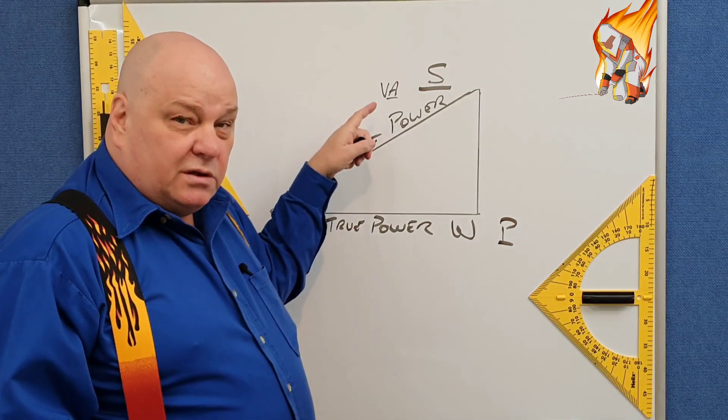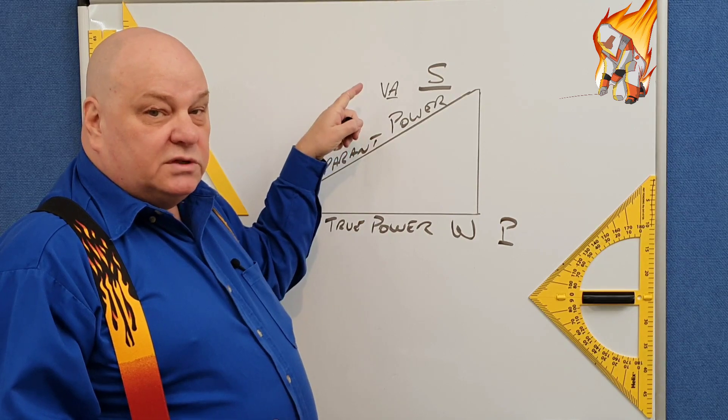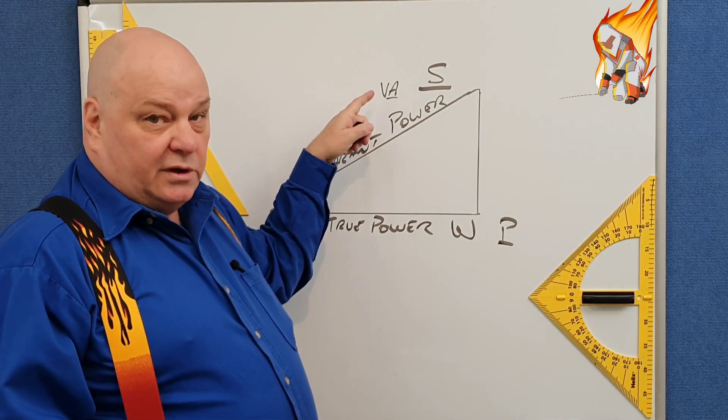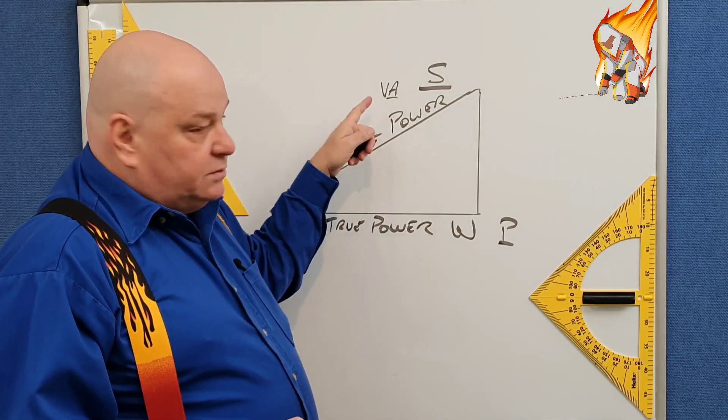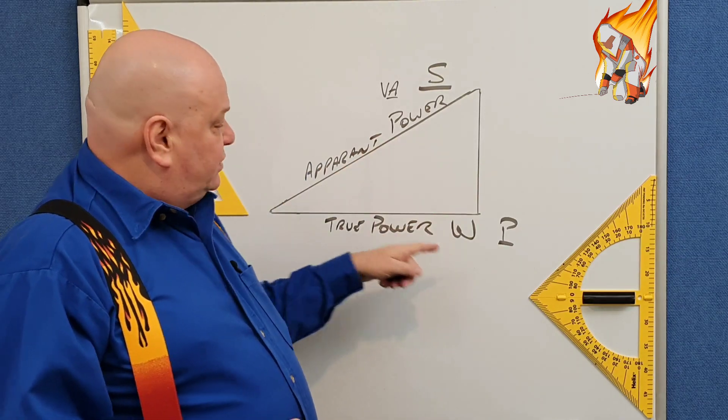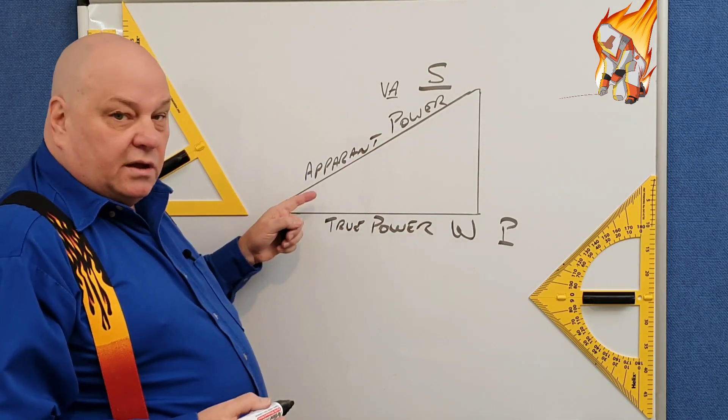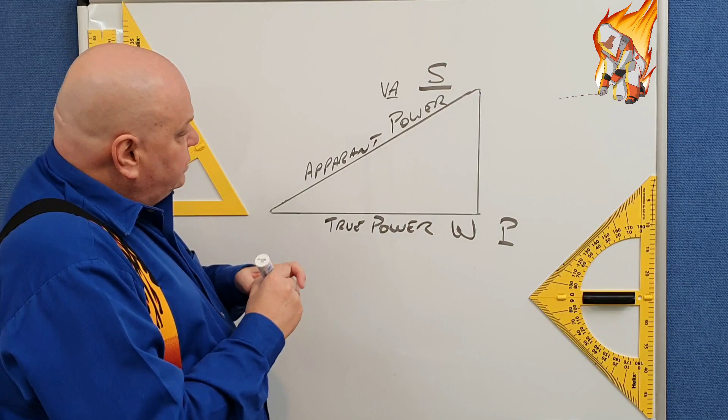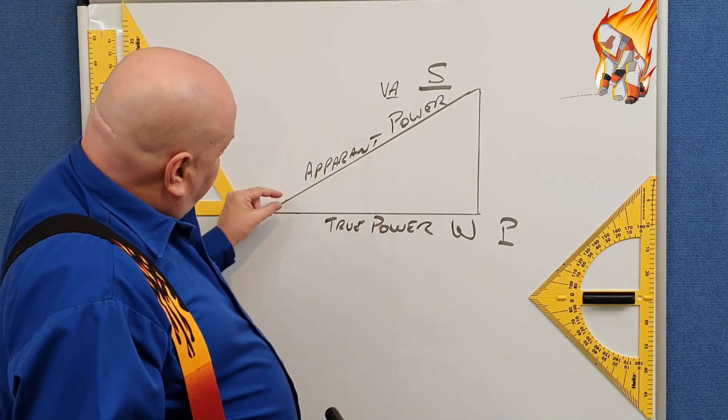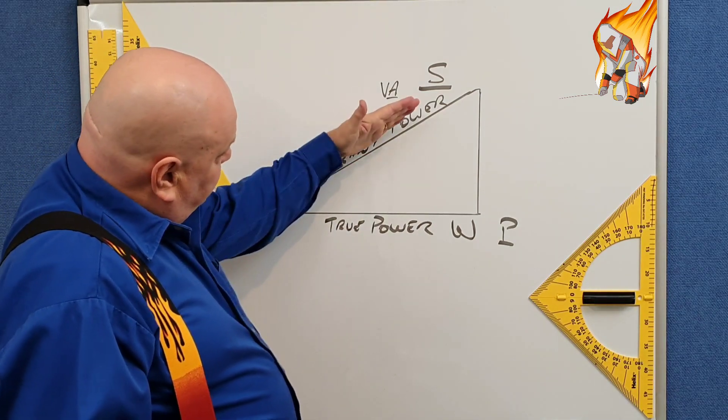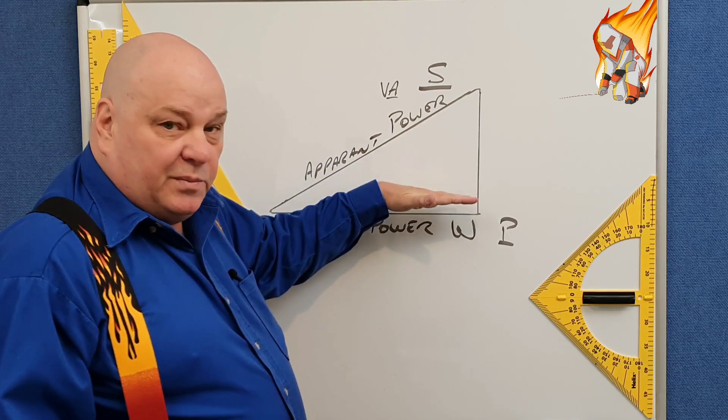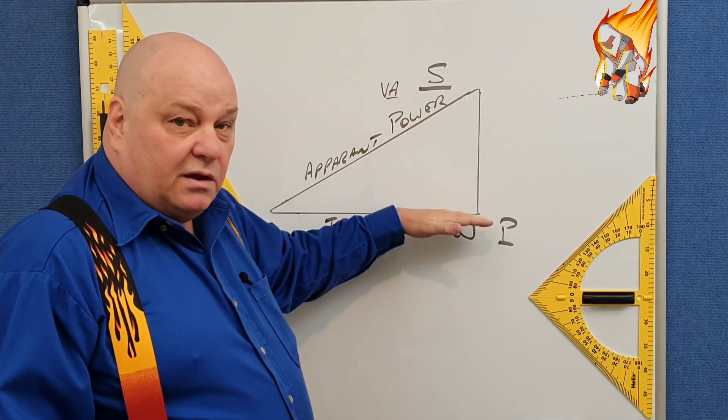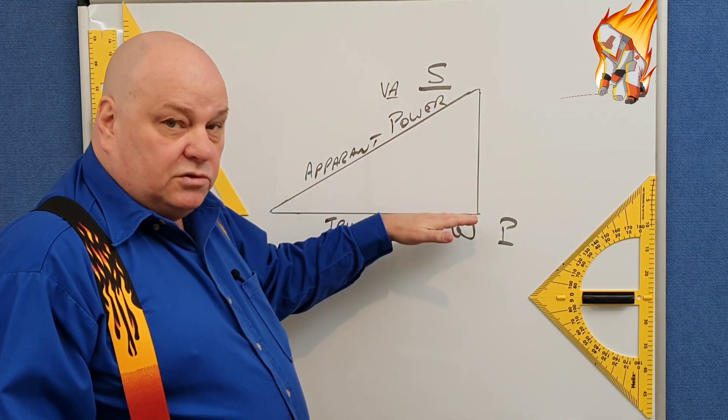The difference between VA, which is the volts and amps that is supplied to it, the difference between VA and watts is this angle here. As you can imagine, if that angle was zero, then that supply power would be down here with the true power.